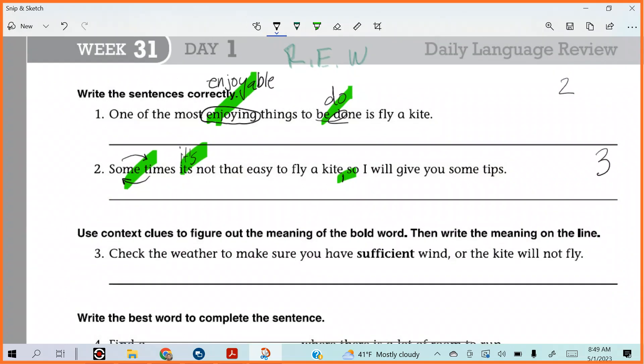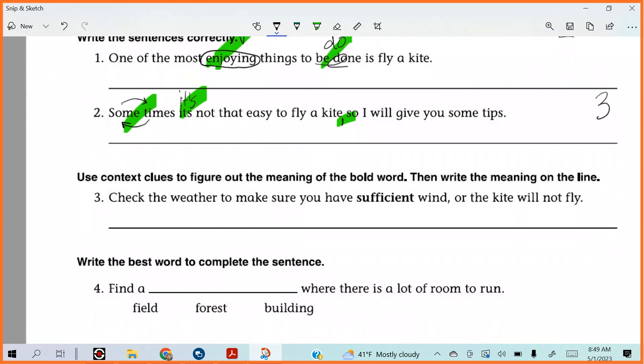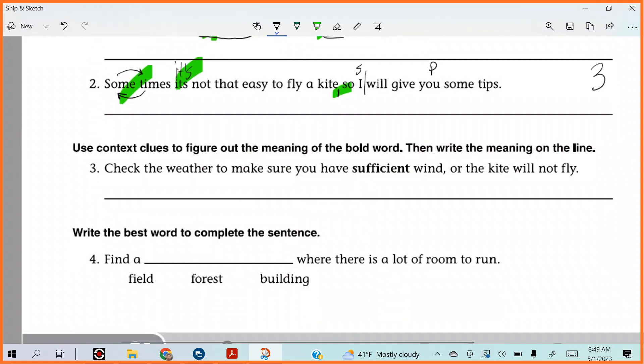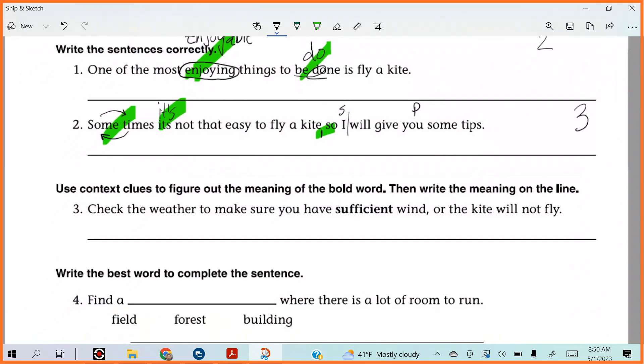Hold up your DLRs. Let's see how the writing part went for you guys. Some of you need to get them written out, but very good. Could you eliminate so? No. Sometimes, it's not that easy to fly a kite. You could put a period and say, I will give you some tips. But I like the conjunction because we have a subject. I. What's the predicate? Will give you some tips. Very good. All right. So, we have two for number one, three for number two.